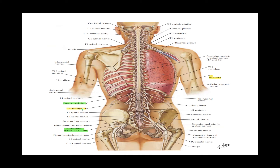The filum terminale runs in the midline from the conus medullaris downward — it is the midline structure of the cauda equina. When it pierces the dura, it becomes the filum terminale externum. An important landmark: the dural sac ends at the level of S2-S3, sometimes S1-S2, or S2-S3 intervertebral disc level.